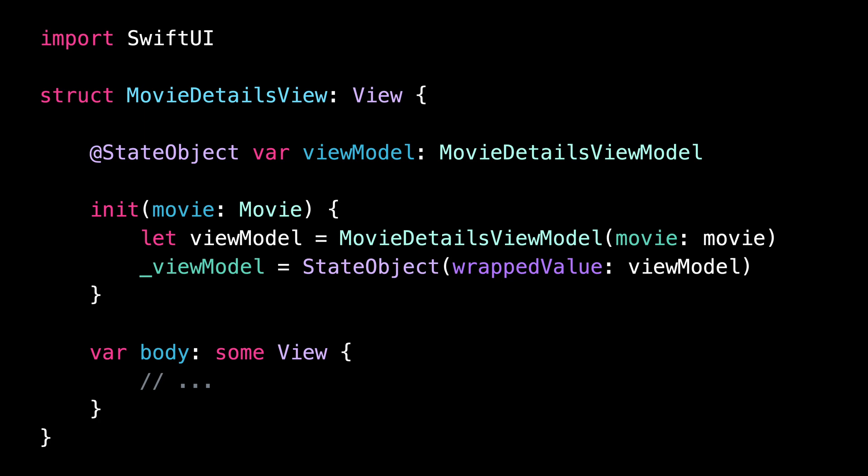This means that in the best scenario, this code is being wasteful by instantiating view models which will never be used. And in the worst scenario, if the initializer of the view model has any side effects, these side effects will be executed more than they should, which can lead to very subtle bugs.